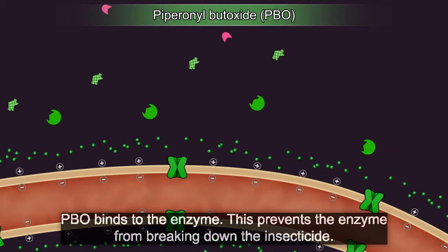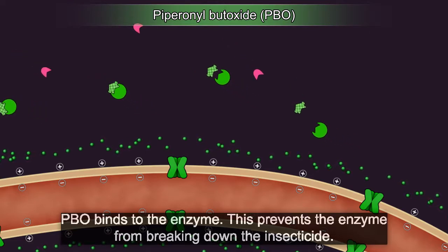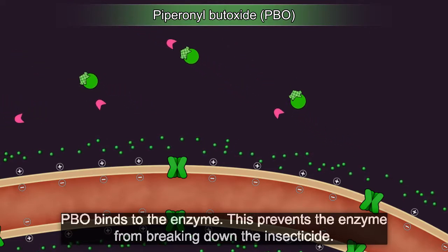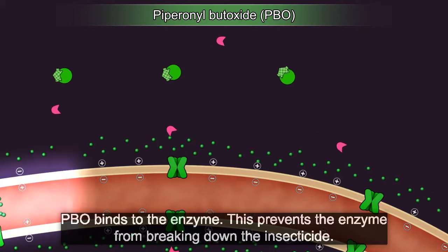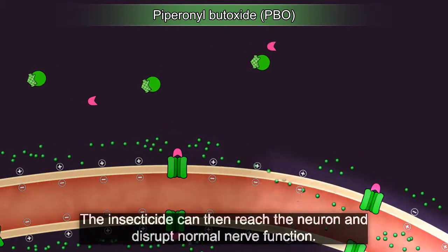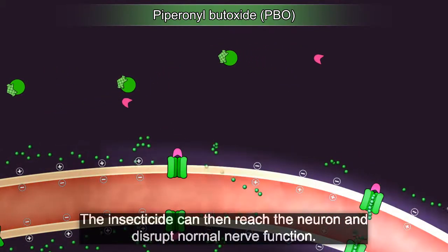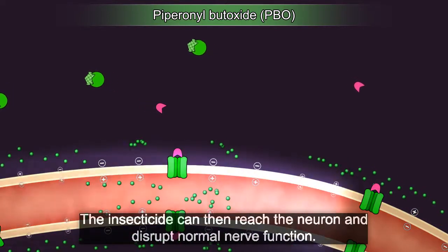PBO binds to the enzyme, which prevents the enzyme from breaking down the insecticide. The insecticide can then reach the neuron and disrupt normal nerve function.